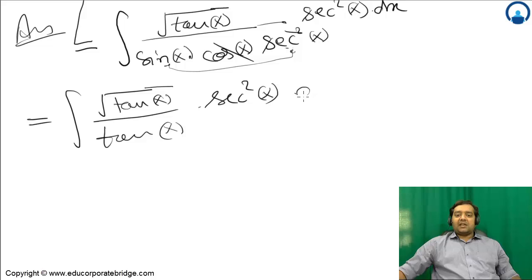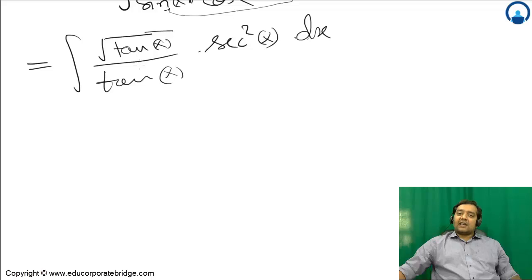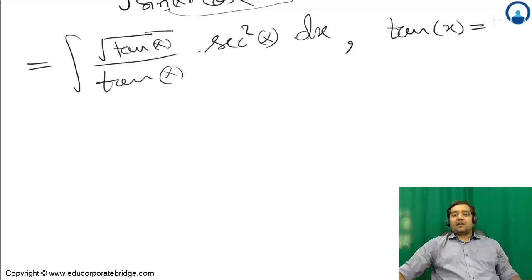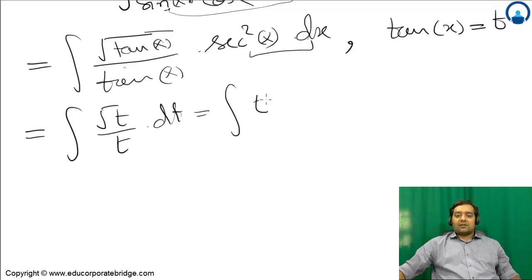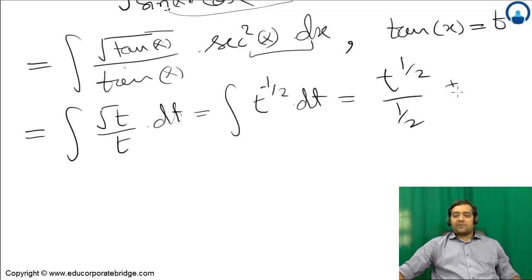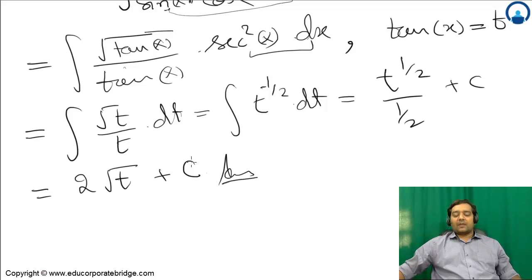We forcibly multiply by sec²(x). Let tan(x) = t, so sec²(x) dx becomes dt. This gives us integral of root(t) upon t dt, which is t raised to (1/2 - 1) dt, i.e., t^(-1/2) dt. The integration becomes t^(n+1) upon (n+1) plus c, which equals 2·root(t) plus c. That is the answer.